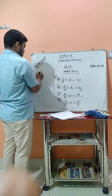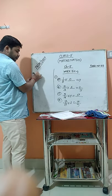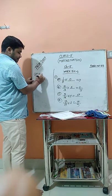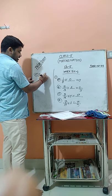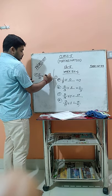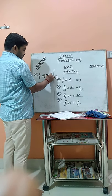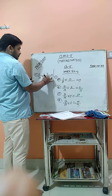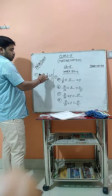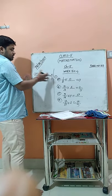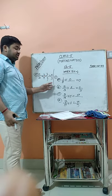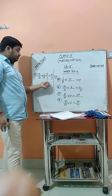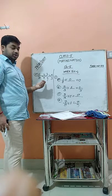Now see number E: 2/3 multiplied by blank equals blank multiplied by 3/4. Both sides should be equal. Here 2/3 is on the left side, so you put 3/4 in the blank. Then multiplied by 2/3 on the right side. Now both sides will be equal.